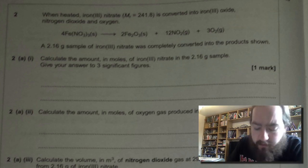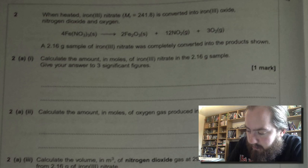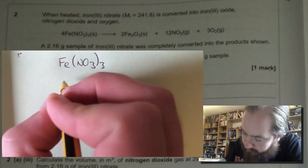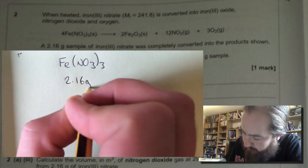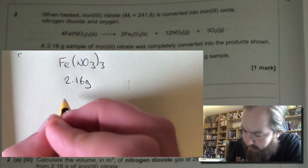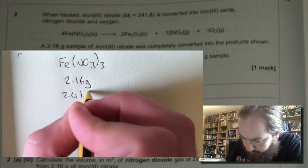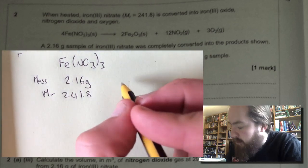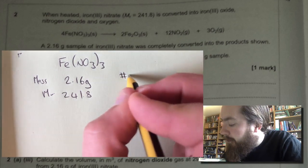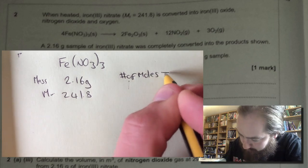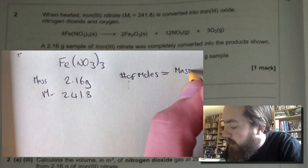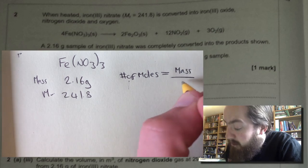So first thing we need to do is write down what information we've got. We've got iron nitrate, we know that there is 2.16 grams, and we know it's got a molecular mass of 241.8. Okay, we can use this information to work out the number of moles. The number of moles is equal to the mass divided by the mass per mole or the molecular weight.